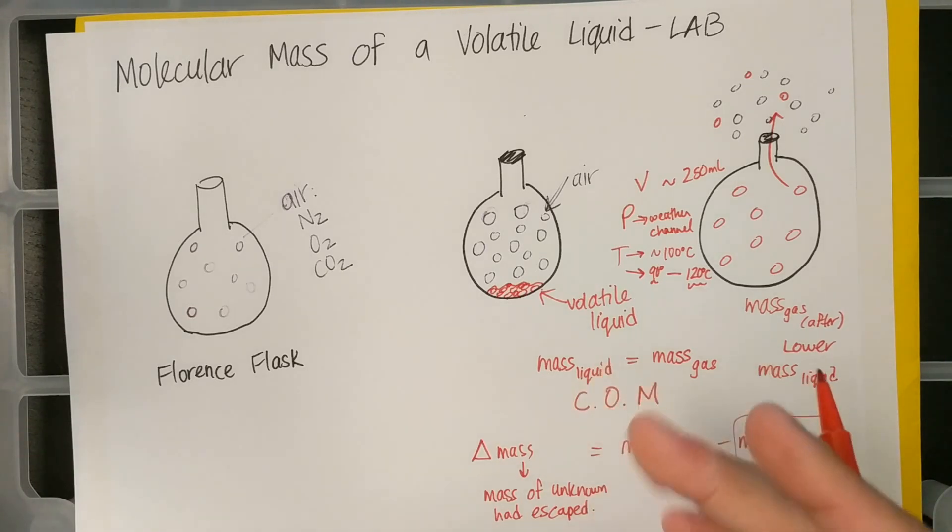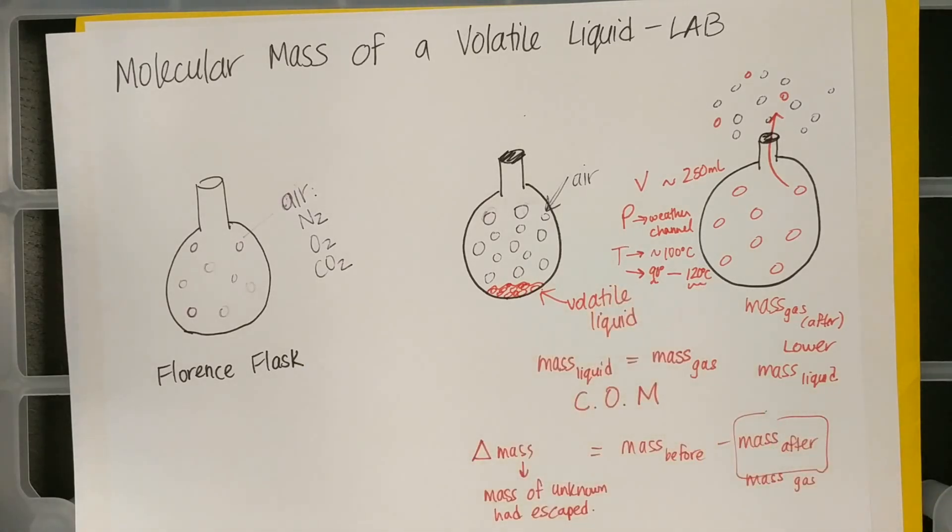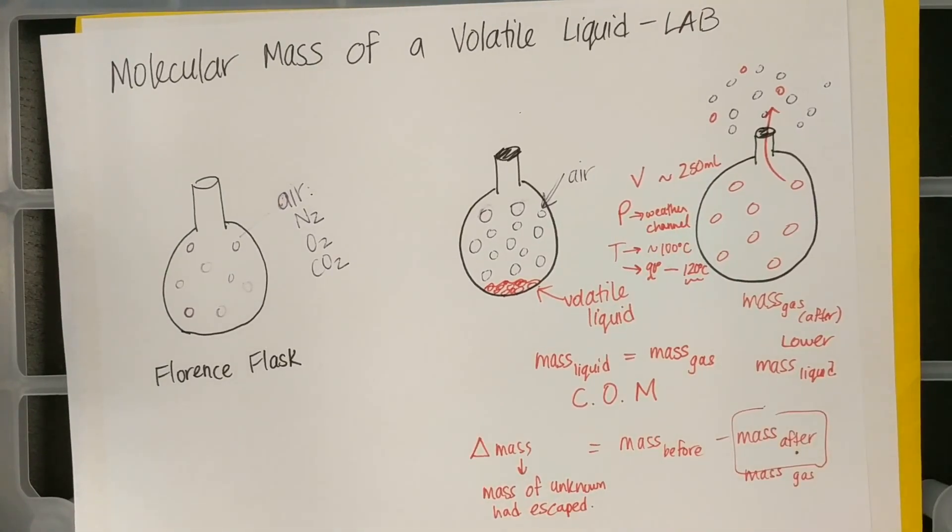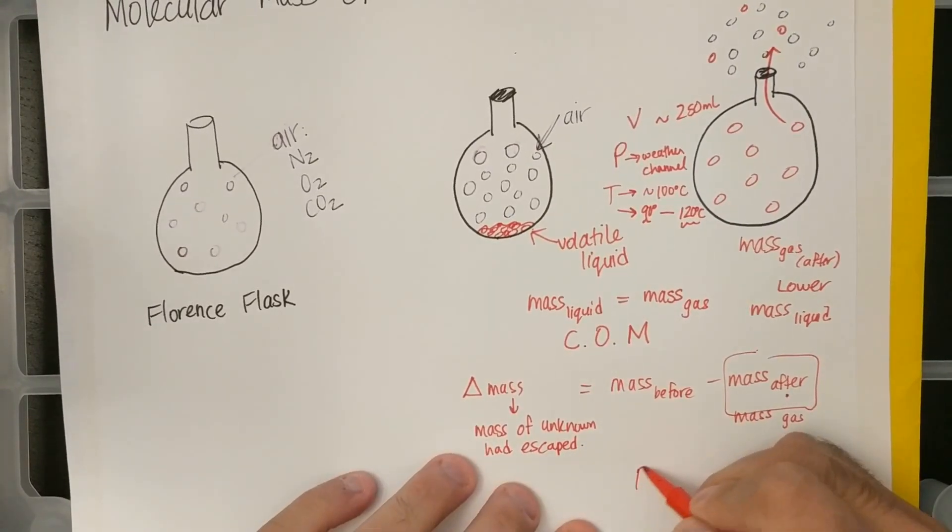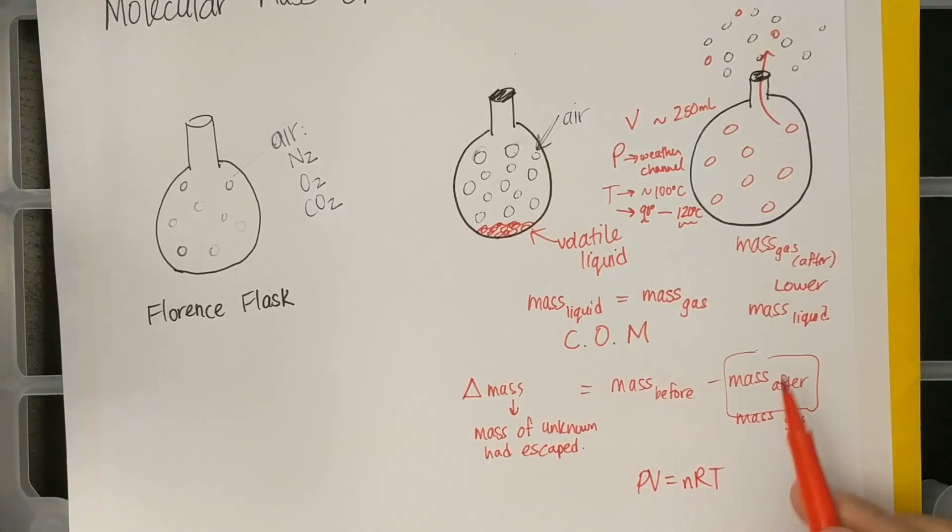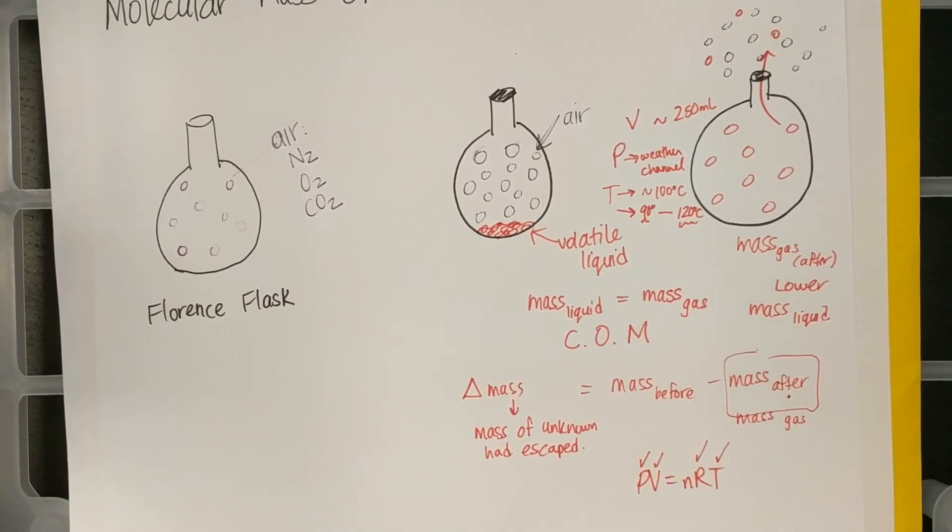So if you use the 100 degrees Celsius as your assumption in your calculations and your molar mass is a bit off, make sure in your conclusion and your error analysis you say, hey, we never actually got the temperature of the gas, and we just assumed it was 100 because the water was boiling. And I had told some of you that your gas or your liquid boiled at some temperatures that were lower than 100, and some of you got it higher than 100. So you should be within error when you do your calculations. And so we have the mass of the gas, the pressure, the volume, and temperature, and r is the constant. Make sure you know to use this equation: PV equals nRT.